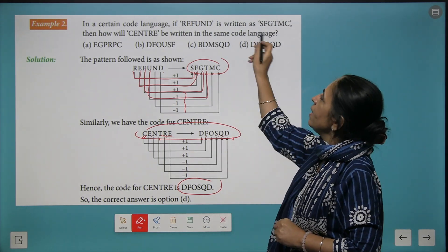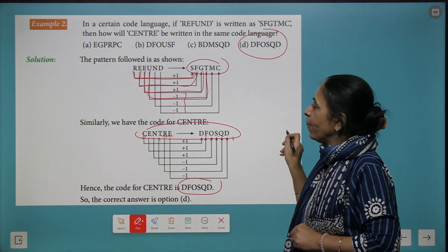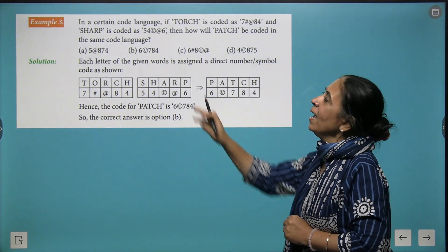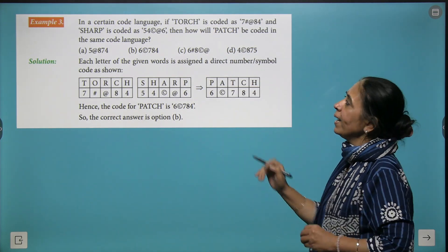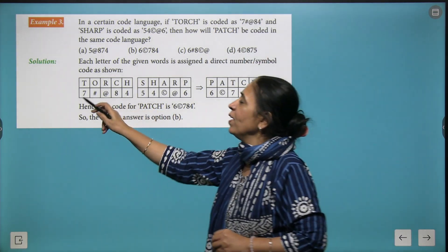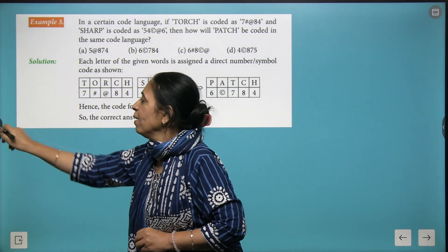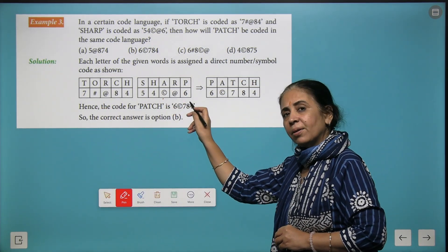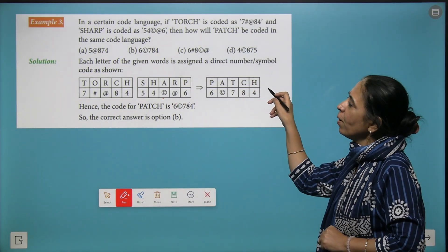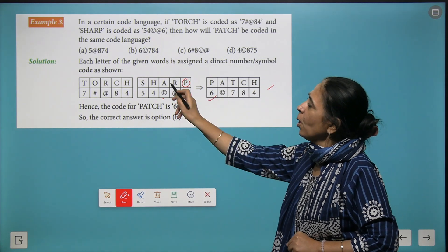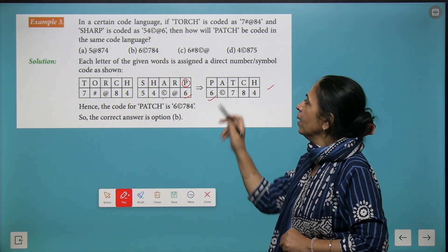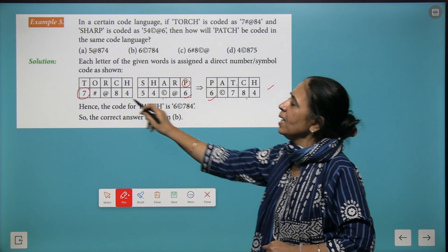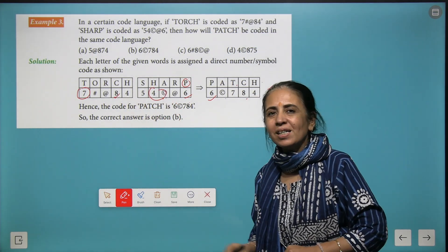Here in a certain code, we write TORCH as 7#@84, and SHARP as 54C@6. Now you have to make a code for PATCH. Going to P, we write 6. Going back to A, we write C. Going to T, we got 7, and C is 8, and H is 4. So your code is 6C784, and we extracted B as the right answer.